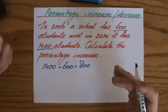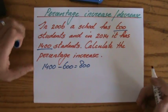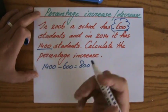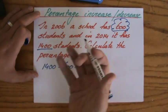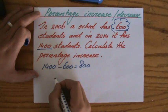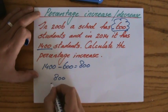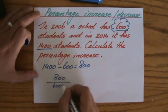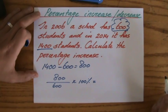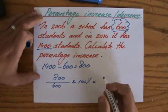What is the original value? How many students originally went to this school? That is 600. So to calculate the percentage increase, I do the change in value over the original value and times that by 100%. If you do that in your calculator, you'll get 133.33%.